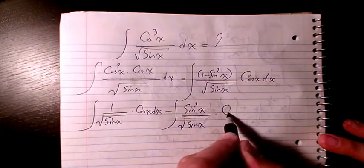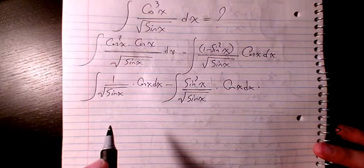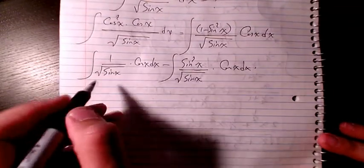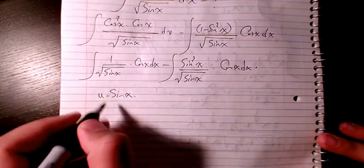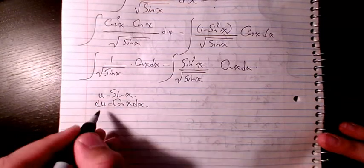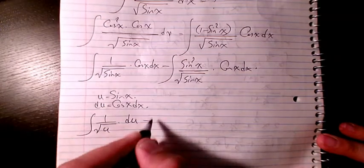Then I will have a variable change or substitution. I consider u as sine x, so du will be cosine x dx. So it will be 1 over square root of u du, minus u squared divided by square root of u times du.